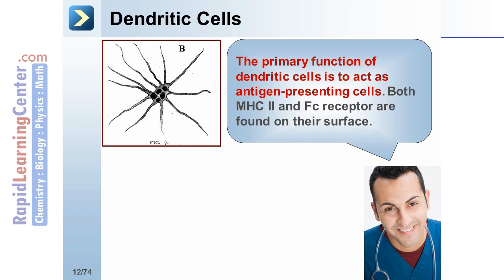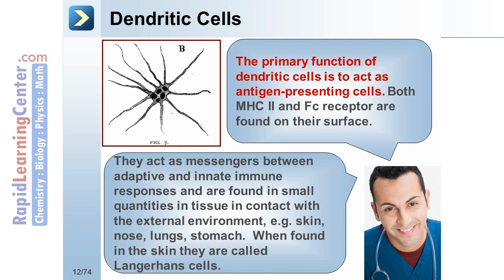The primary function of dendritic cells is to act as antigen-presenting cells. Both MHC2 and FC receptor are found on their surface. They act as messengers between adaptive and innate immune responses, and are found in small quantities in tissue in contact with the external environment, such as the skin, nose, lungs, and stomach. When found in the skin, they are called Langerhans cells.